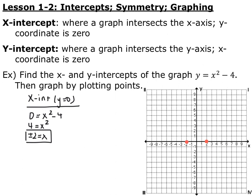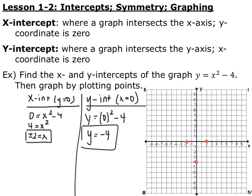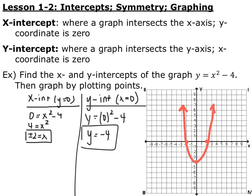Now go ahead and pause the video and find the y-intercepts of the graph. Y-intercepts occur when x is equal to 0, so I replaced x with 0. You end up with y is equal to 0 squared minus 4, or y is equal to negative 4. I plotted that point right here. So remember, x-intercepts occur when y equals 0, and y-intercepts occur when x is equal to 0.